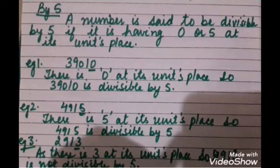We start with the divisibility test of 5. A number is said to be divisible by 5 if it has 0 or 5 at its units place. For example, the number 39010 — if we check its units place, there is 0, so yes, the number is divisible by 5.